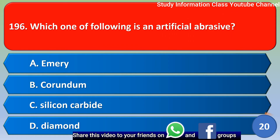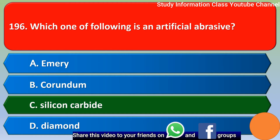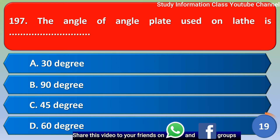Next question. Which one of the following is an artificial abrasive? Option A, emery; Option B, corundum; Option C, silicon carbide; Option D, diamond. The correct answer is Option C, silicon carbide.